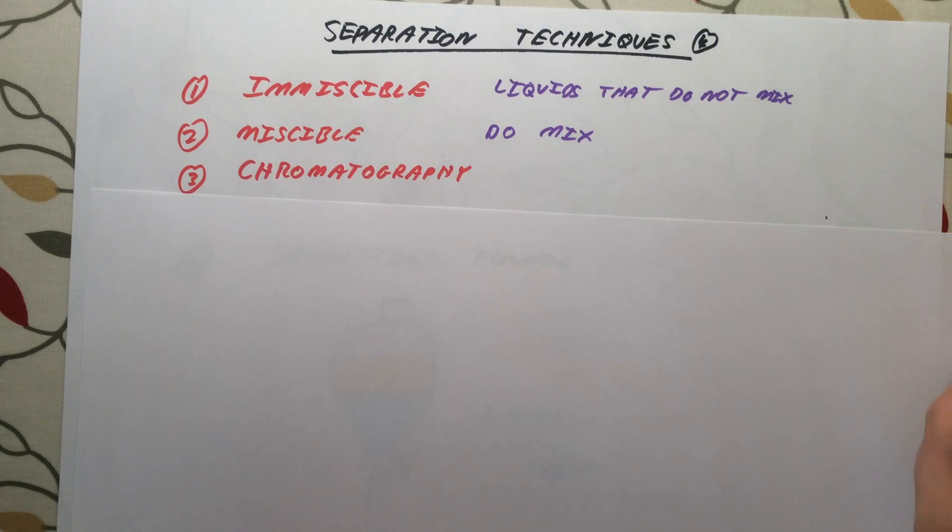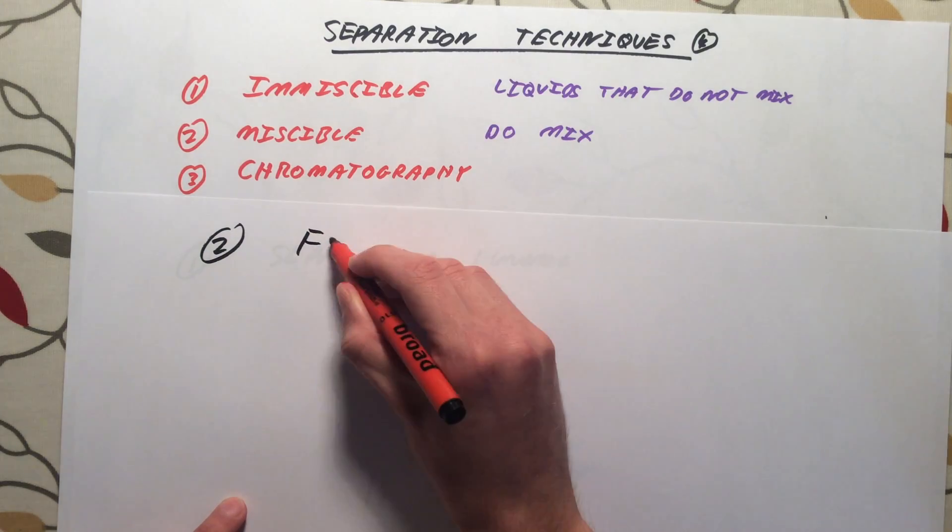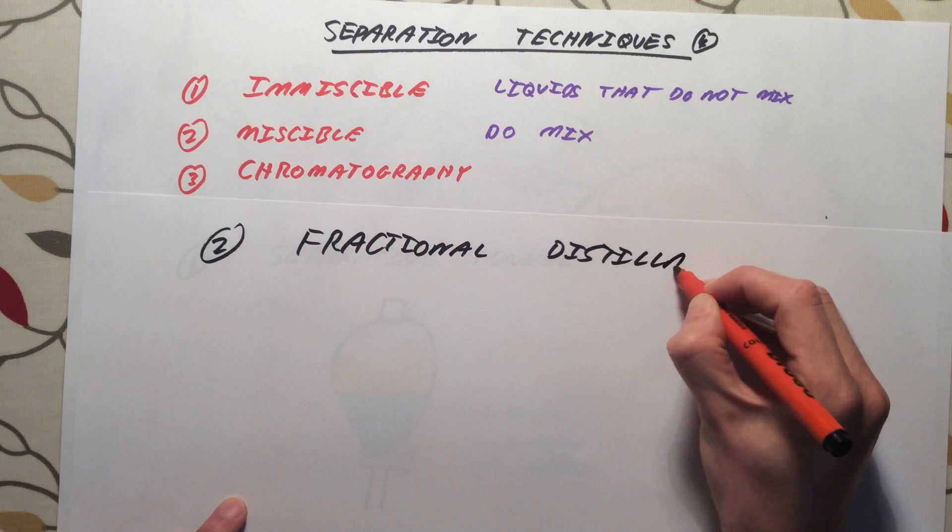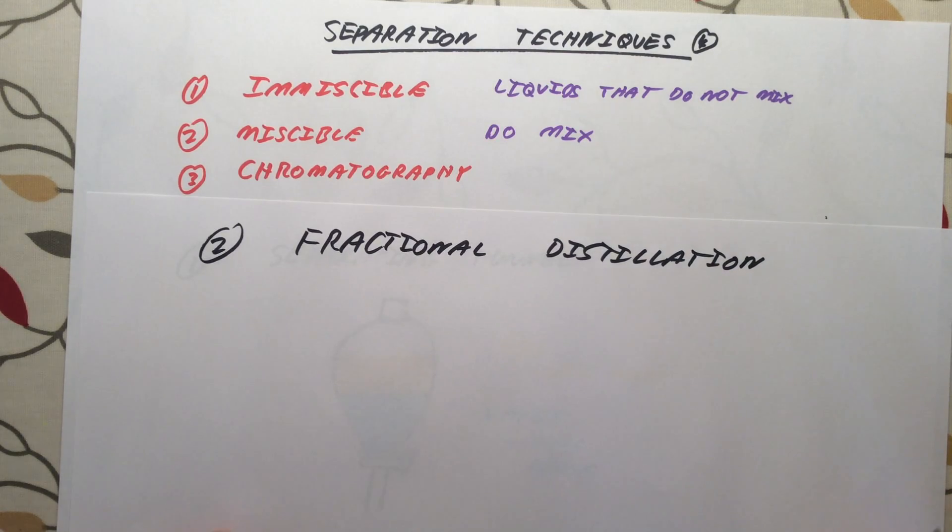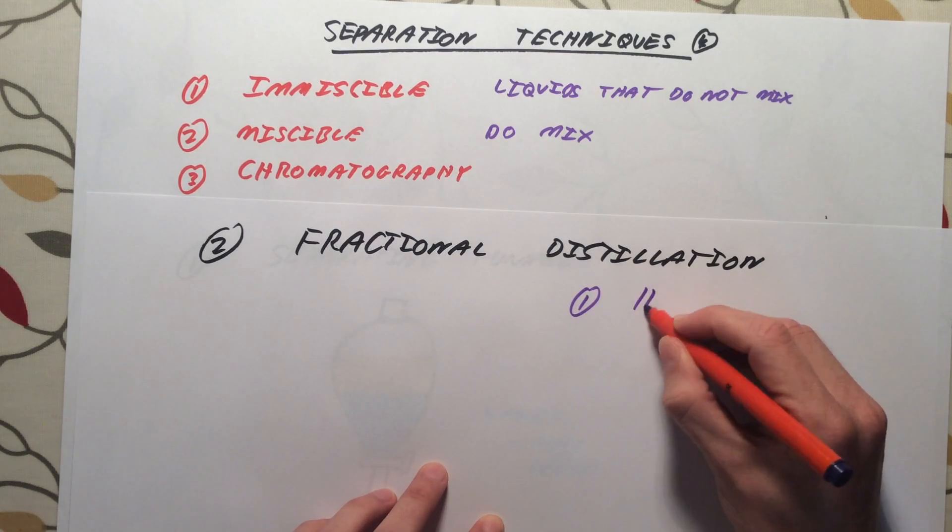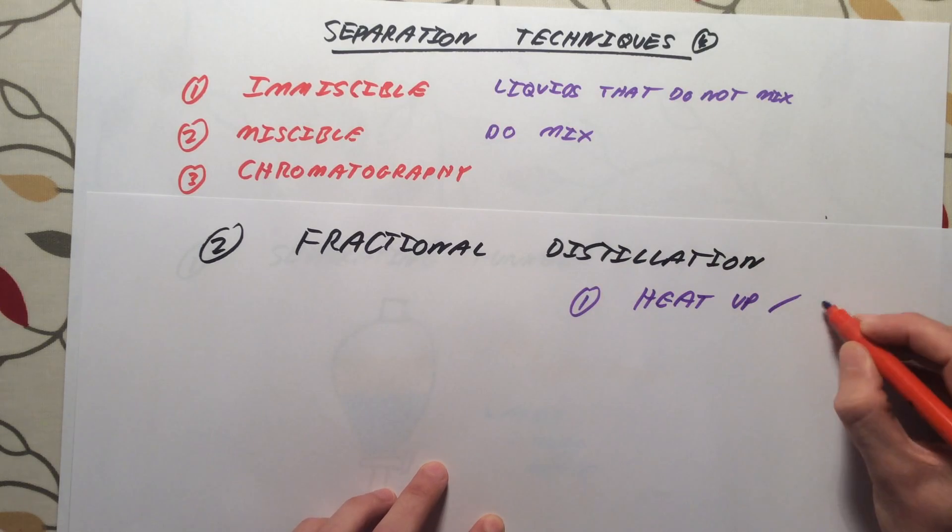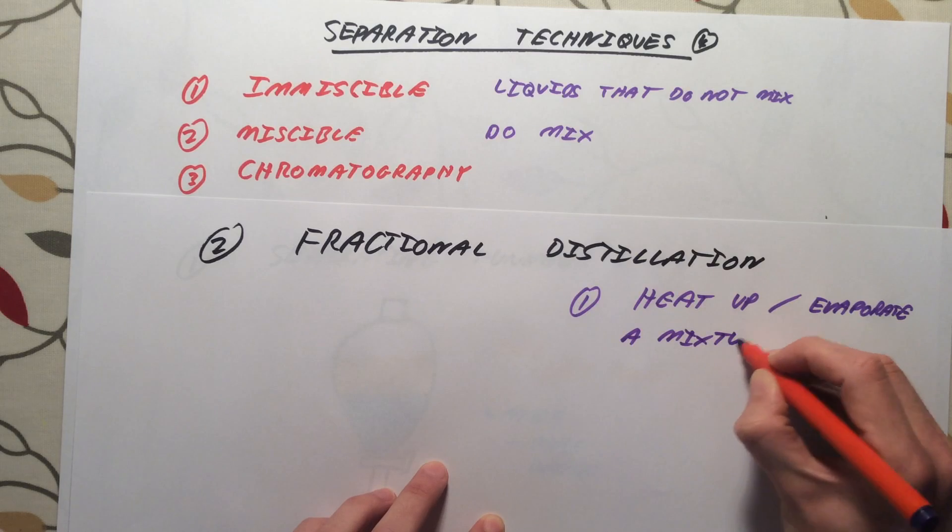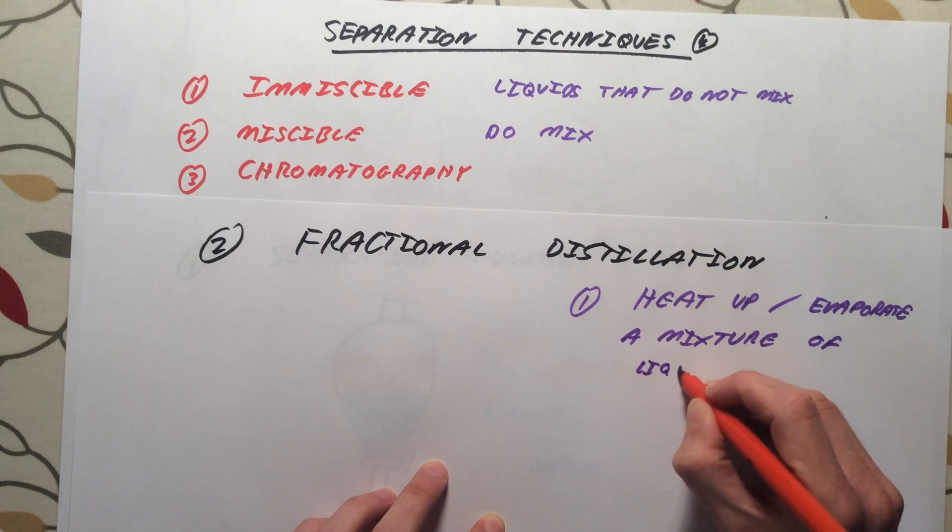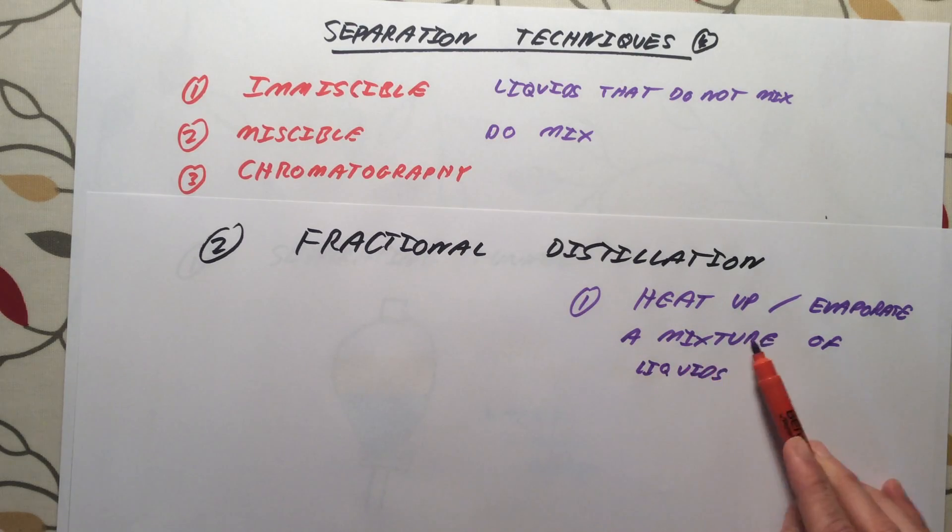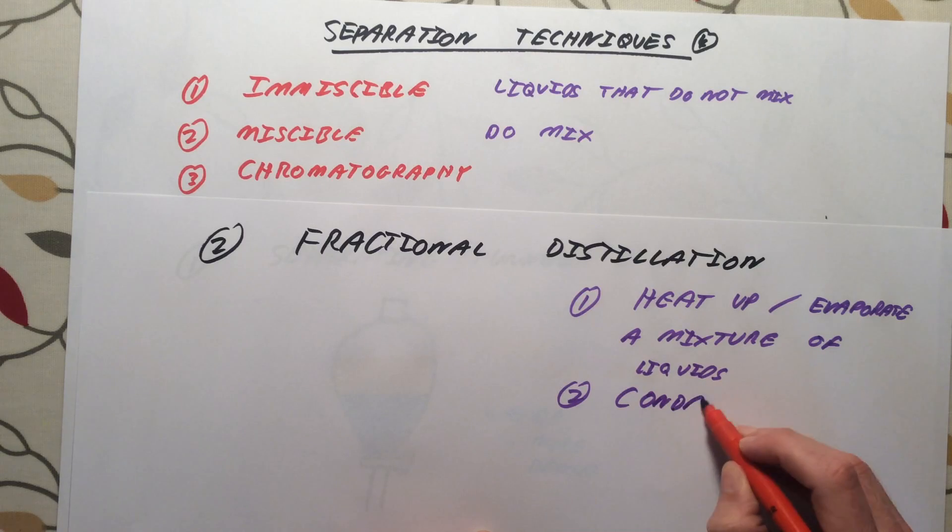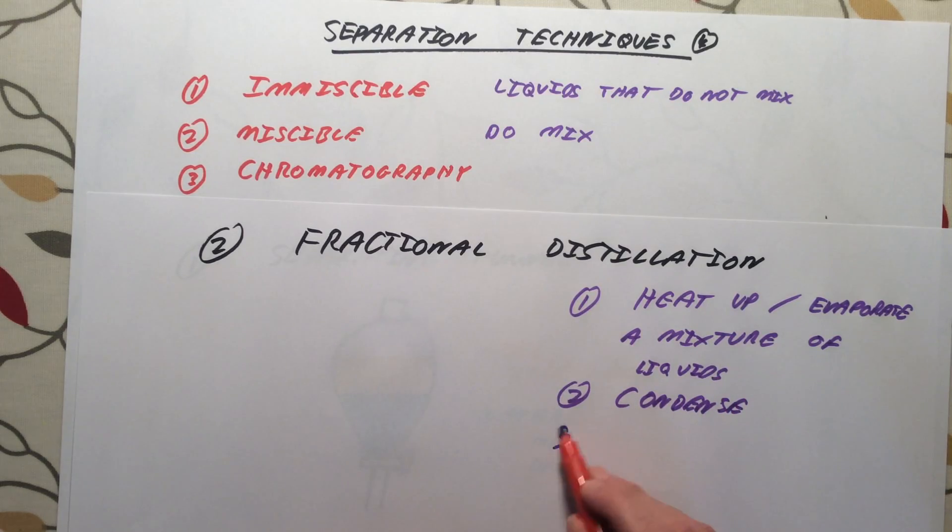The second method we are going to use is used to separate miscible liquids, and here we are going to use an old favourite from core chemistry, fractional distillation. So a quick reminder about the key parts of fractional distillation. We are going to want to heat up or evaporate or boil a mixture of liquids. And then hopefully if we have a mixture of liquids which will have different boiling points, the mixture will separate out. And we can condense the different compounds, the different chemicals at different points, and we are then going to collect them.